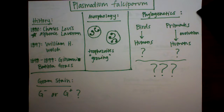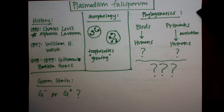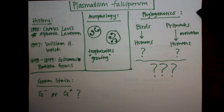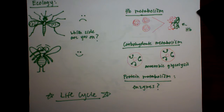Consider this question: what would be the Gram stain of Plasmodium falciparum — Gram negative or Gram positive? The answer is neither, because Gram staining is not possible for P. falciparum since it does not possess a cell wall. Instead, the preferred stain used in the lab is Giemsa stain, which helps with the detection of certain morphological features of P. falciparum.